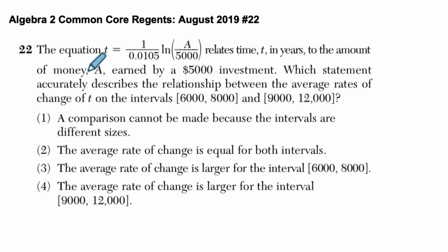Okay, so we're told here that we have this equation, and it says t equals 1 over 0.0105 times the natural log of A over 5,000. And we're told here that it relates time in years to the amount of money A earned by a $5,000 investment. Which statement accurately describes the relationship between the average rate of change of t on the intervals 6,000 to 8,000 and 9,000 to 12,000?